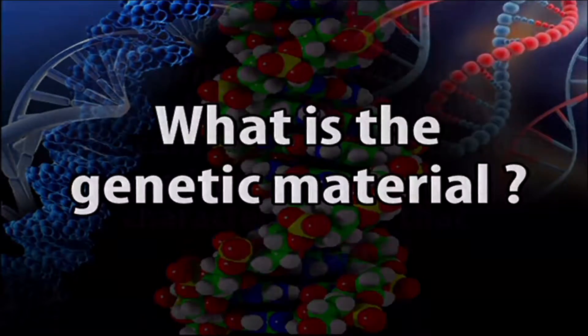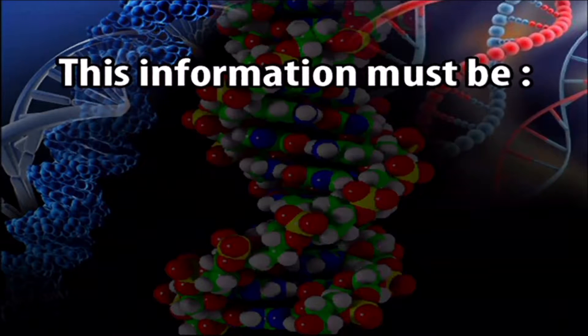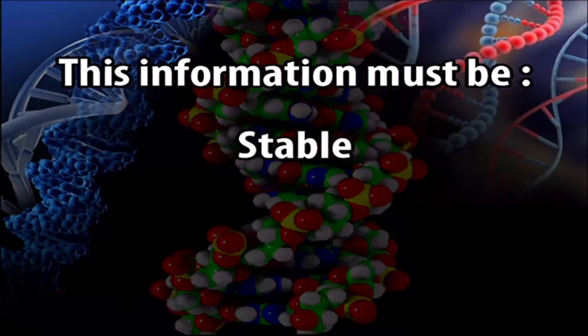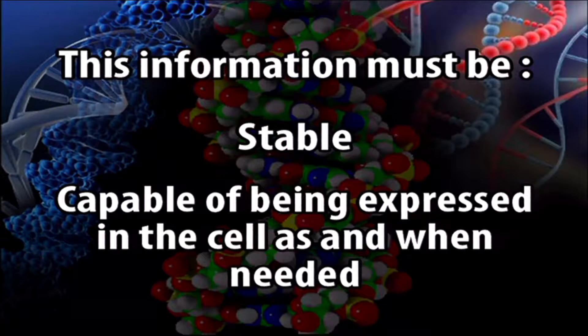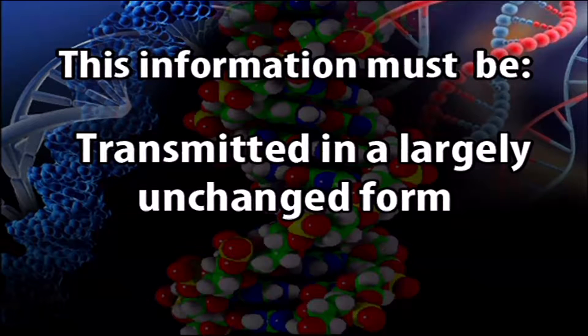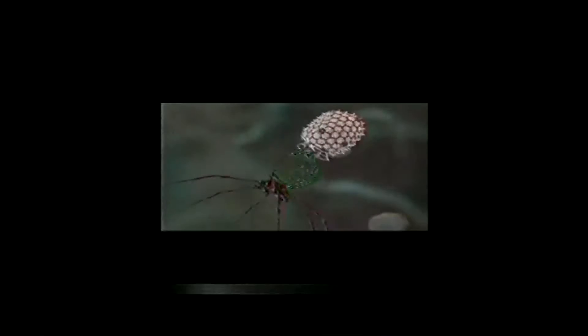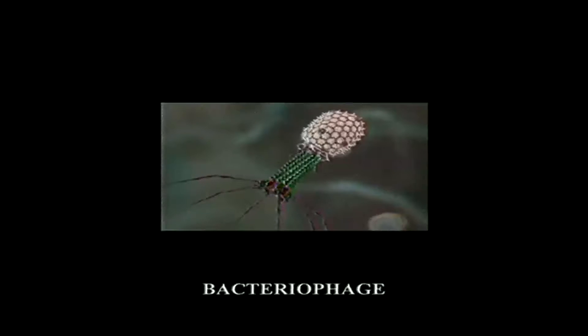Since the structure of DNA is not our immediate concern in the present lecture, we will be specifically interested in DNA as the genetic material. The genetic material of an organism is the substance containing information specifying the inherited characteristics of the organism. This genetic information must be stable, capable of being expressed in the cell as needed, able to undergo accurate replication, and transmitted in a largely unchanged form. While most organisms universally use DNA as the genetic material, certain bacteriophages, plants, and animal viruses utilize RNA as the genetic material.